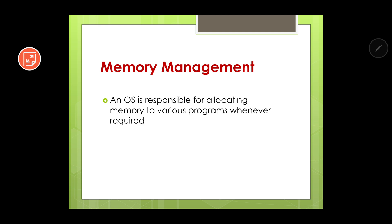Next is memory management. For storing any data — temporarily or permanently — memory is required, and it is managed by the operating system. An operating system is responsible for allocating memory to various programs whenever required. In a computer you can run various programs like MS Word, MS PowerPoint, or play games — for all these things memory is required. The operating system is responsible for managing the memory by allocating memory space to each program.